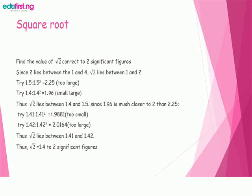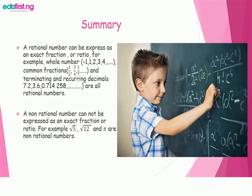Summary: A rational number can be expressed as an exact fraction or ratio. For example, whole numbers like -1, 2, 3, 4, and so on; common fractions like 1/2, 3/4, 1/7; and terminating and recurring decimals like 7.2, 3.6, 0.714258 repeating are all rational numbers.